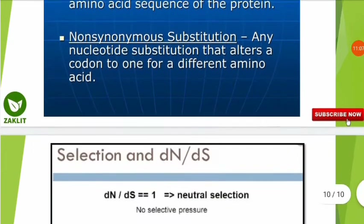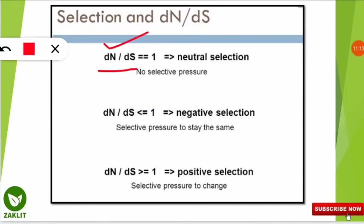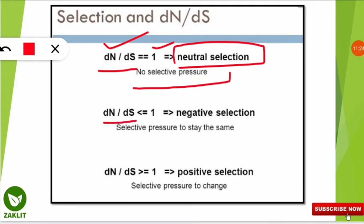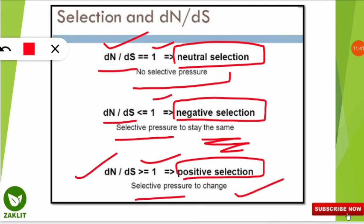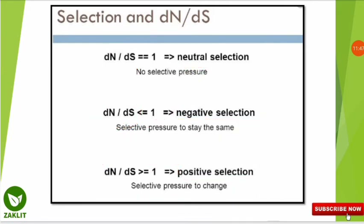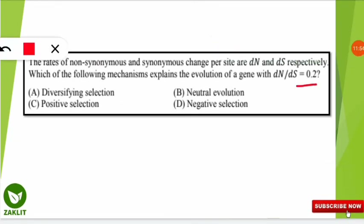Now the key concept to remember is the dN/dS ratio: when dN/dS equals 1, it is called neutral selection, meaning no selective pressure. When dN/dS is less than 1, it is called negative selection, which results from selective pressure to stay the same. When dN/dS is greater than 1, it is called positive selection, where selective pressure drives change. Since the question gives a dN/dS value of 0.2, which is less than 1, the correct option is D — negative selection.